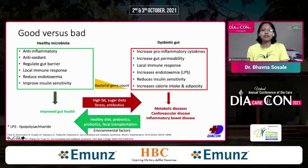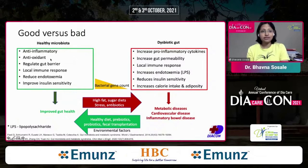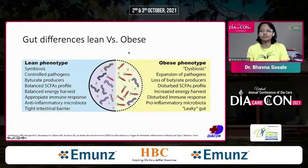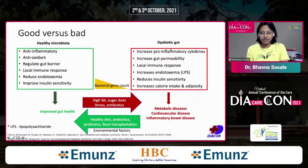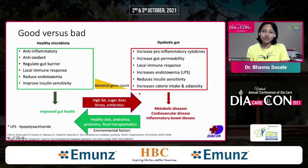What do the good ones do and what do the bad ones do to us? The good or healthy microbiota are anti-inflammatory and antioxidant, they regulate the gut barrier and local immune response, they reduce endotoxemia and improve insulin sensitivity. On the other hand, the dysbiotic gut bacteria increase pro-inflammatory cytokines, increase gut permeability — so there's more leakage — inhibit the local immune response, increase lipopolysaccharide, and reduce insulin sensitivity.